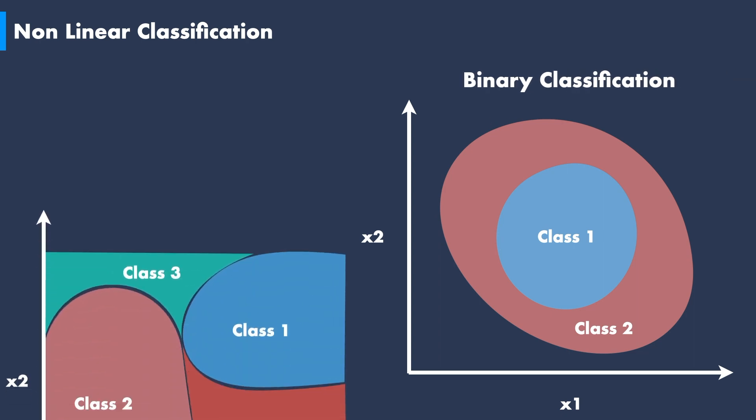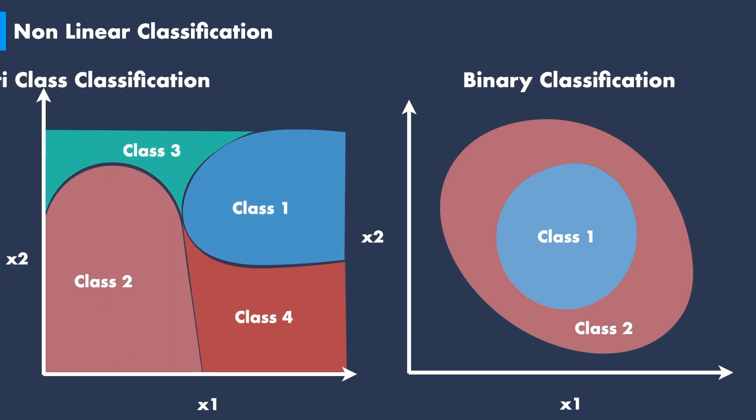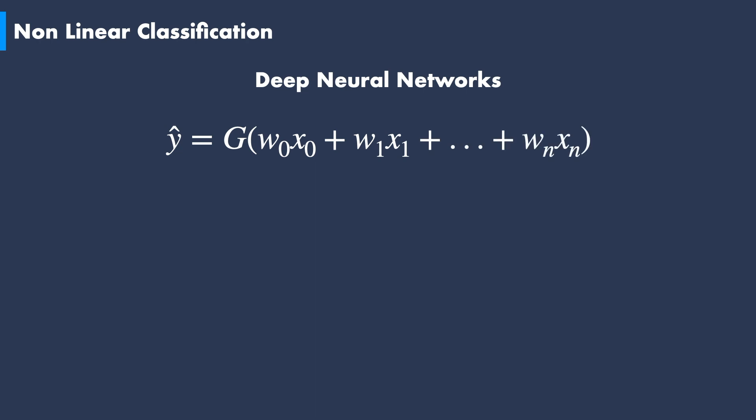The case of non-linear classification problems — multi-class or binary — is where deep neural networks really shine. The formula of the hypothesis in deep neural networks is given as an activation function of some sort, wrapping a linear combination of weighted terms that are no longer the raw input features.